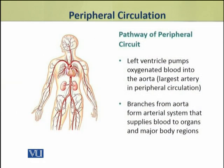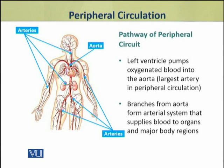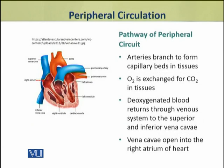In the peripheral circuit, the left ventricle pumps oxygenated blood into the aorta, which is the largest artery in peripheral circulation. Branches from the aorta form the arterial system that supplies blood to organs and major body regions. The arteries branch to form capillary beds in tissues, where exchange of oxygen and carbon dioxide takes place. Deoxygenated blood then returns through the venous system to the superior and inferior vena cava, which open into the right atrium of the heart.